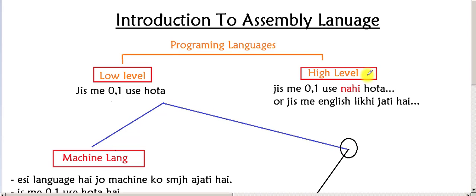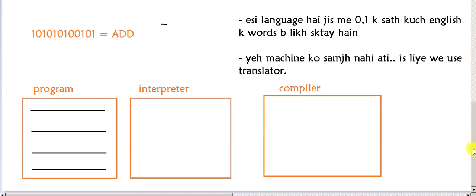Now consider this: the computer's native language is machine language — it is a 0-1 language. This means the computer does not understand high level language directly; we humans can read English, but the computer cannot. There are two types of software which translate high level language and convert it to low level 0-1 language. We call them interpreter and compiler.